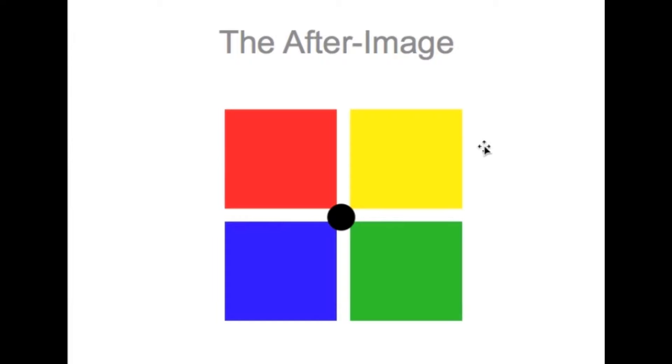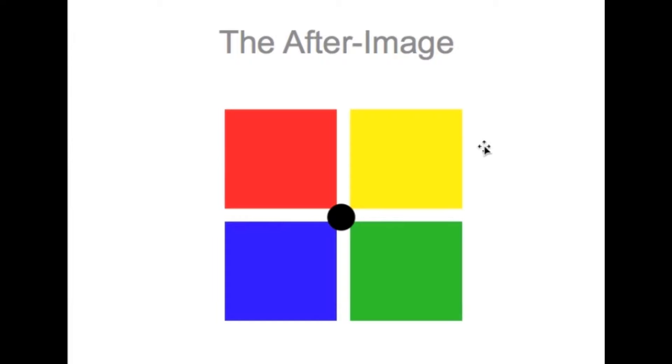What I'd like you to do is look at the black circle for several seconds. And what you should be seeing is in the upper left, it's sort of green. In the upper right, it's sort of violet in color. In the lower left, it's sort of orangey. And in the lower right, it should be kind of pink. You've just experienced the after image.